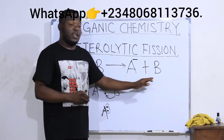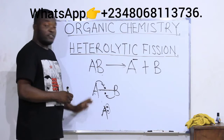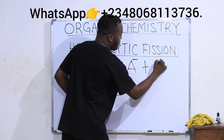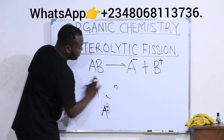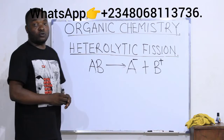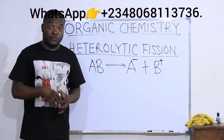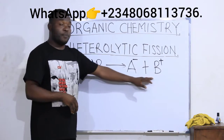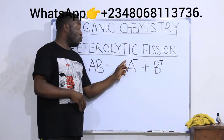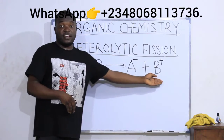When you gain an electron you carry a negative charge, but when you lose an electron you carry a positive charge. B lost its electron to A, so B carries a positive charge. This is not like homolytic breaking, where nobody gained and nobody lost, and there are no charges. But in this case, A gained and B lost — A took the two electrons, B took nothing, which is why they carry charges.